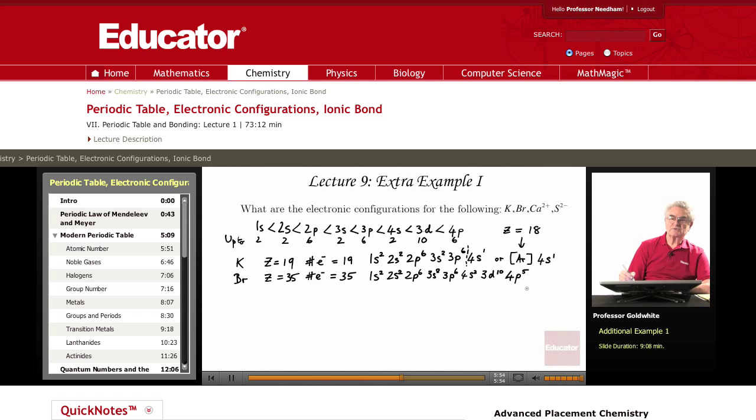Notice the elements which have p5 beyond a closed shell are all the halogen elements, those in the group 7a or 17 on the periodic chart.